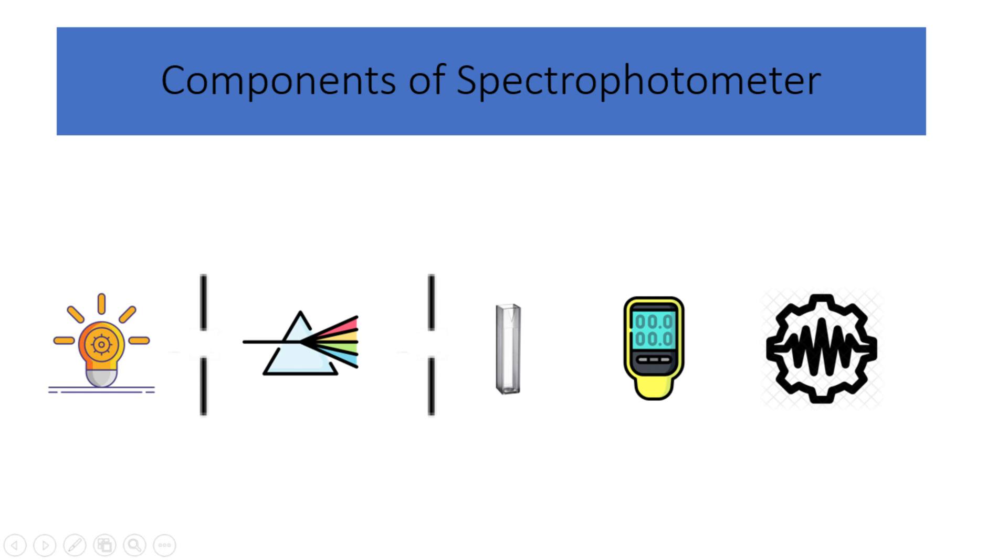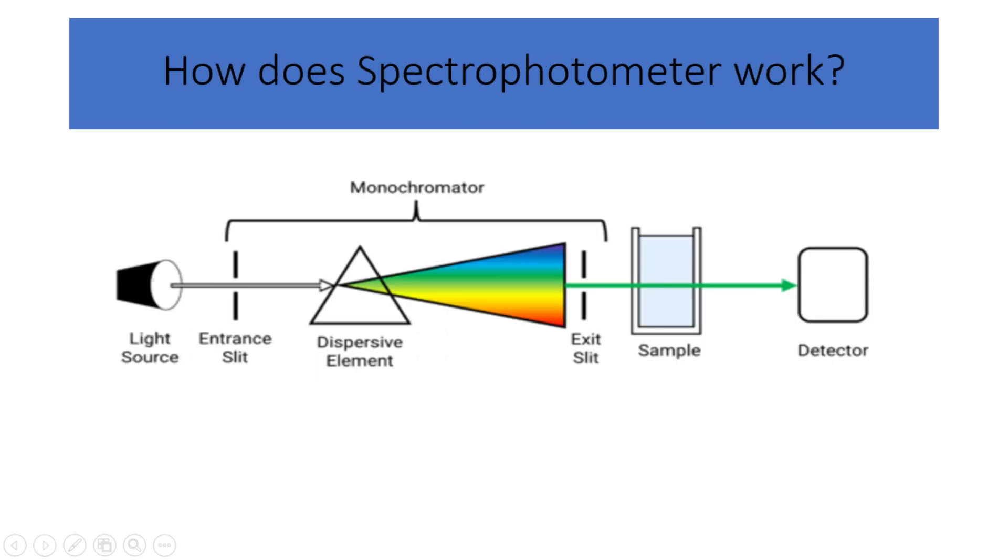How does spectroscopy work? Light from the source passes through the entrance slit and enters the monochromator. The monochromator disperses the light into its different wavelengths using a prism or grating. The dispersed light beam is directed toward the sample compartment, where the sample is placed. The sample interacts with the light, causing absorption or scattering of specific wavelengths based on its composition and properties.